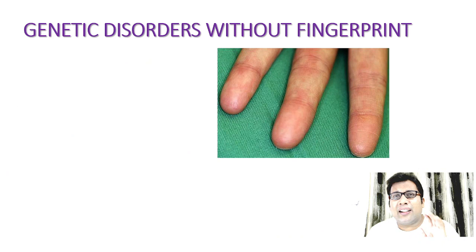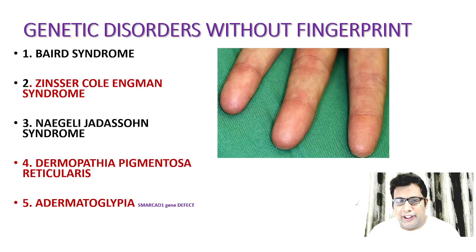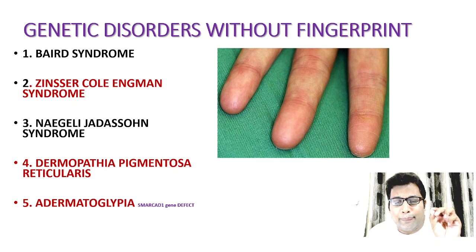There are some conditions where fingerprints are completely absent — usually genetic disorders. You need to remember the names: Bates syndrome, Ginser-Coley-Ingman syndrome, Naegeli-Jadassohn syndrome, Dermatopathia pigmentosa reticularis, and Adermatoglyphia due to a defect in the SMARCAD1 gene. All these are genetic disorders.